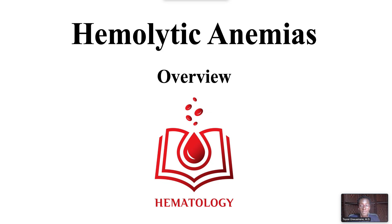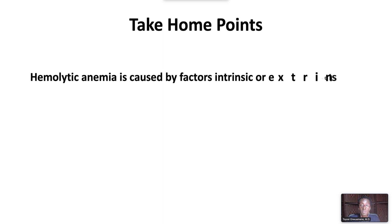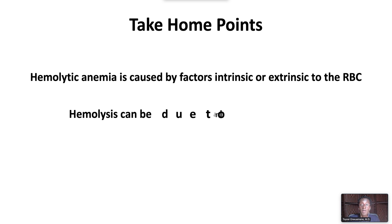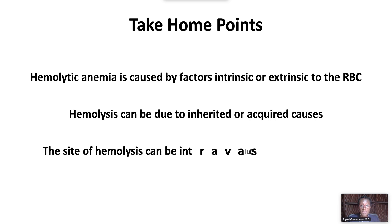Welcome to Hemolytic Anemias: A Brief Overview. We have the following take-home points. Hemolytic anemia is caused by factors intrinsic or extrinsic to the red blood cell. Hemolysis can be due to inherited or acquired causes. The site of hemolysis can be intravascular, extravascular, or both.